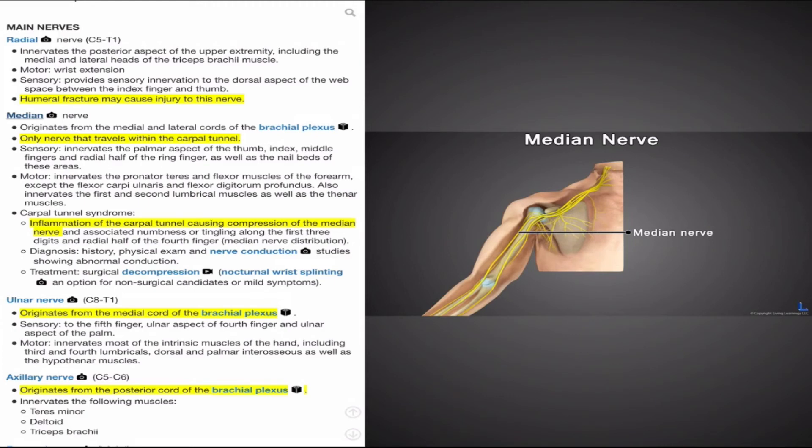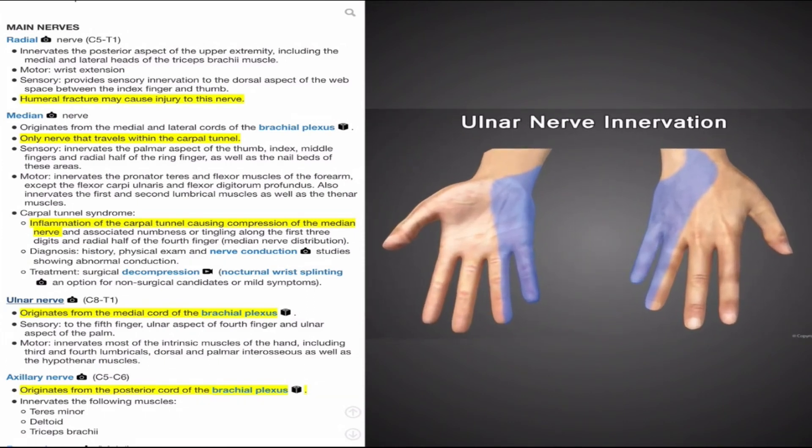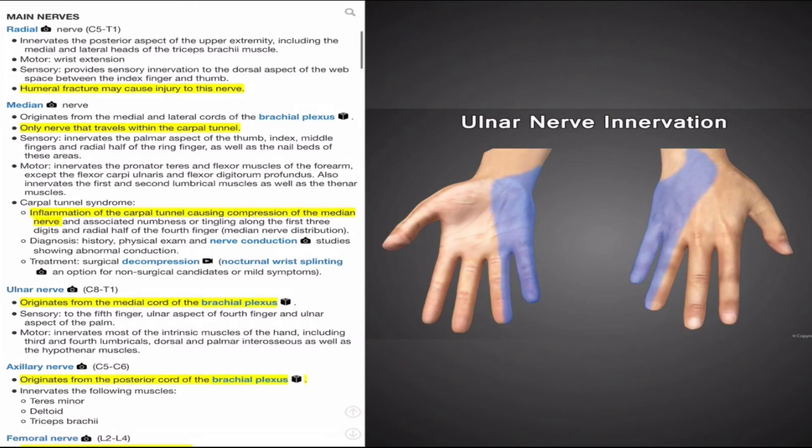The third nerve of the upper extremity that we'll cover is the ulnar nerve, which originates from the medial cord of the brachial plexus, receiving contributions from C8 to T1. The ulnar nerve runs alongside the medial aspect of the upper extremity. Like the radial and median nerves, it provides sensory and motor functions to the upper extremity. Sensory function involves innervation to the fifth digit, ulnar aspects of the fourth digit, and ulnar aspects of the palm. Motor functions involve the intrinsic muscles of the hand, including the third and fourth lumbricals, dorsal and palmar interossei, and hypothenar muscle of the ulnar side of the palm.